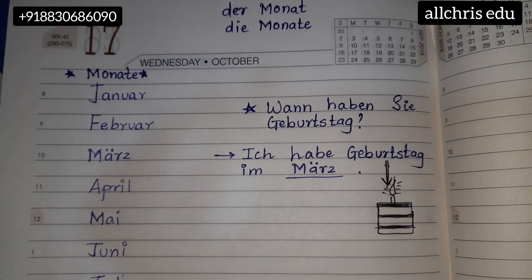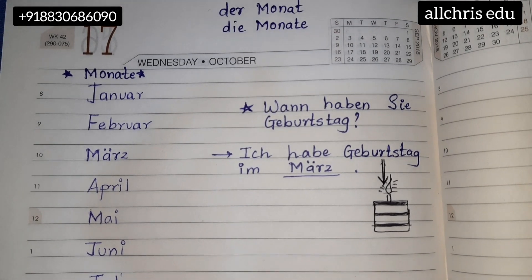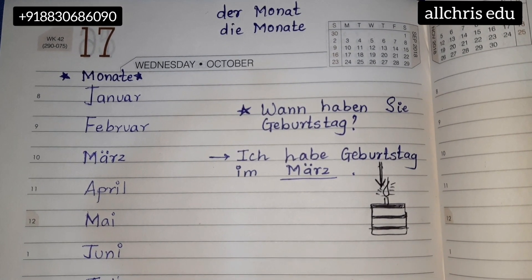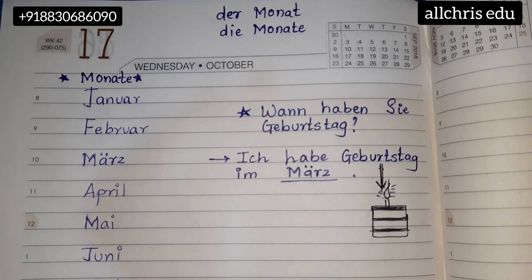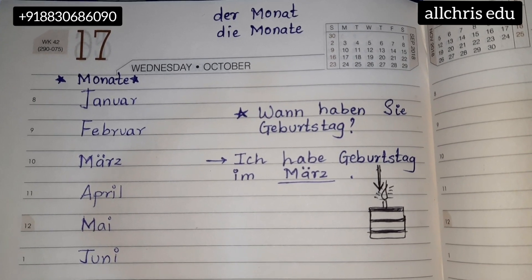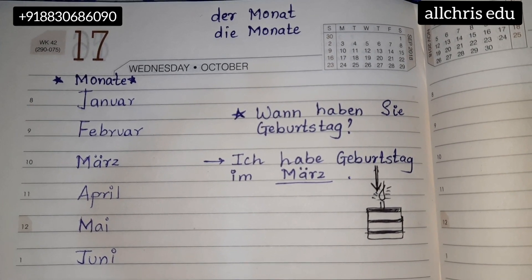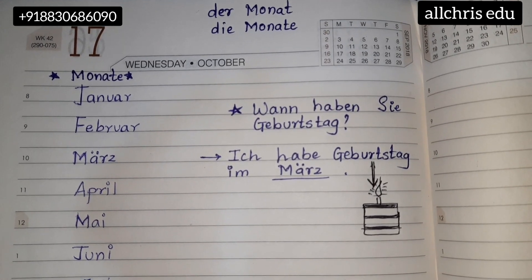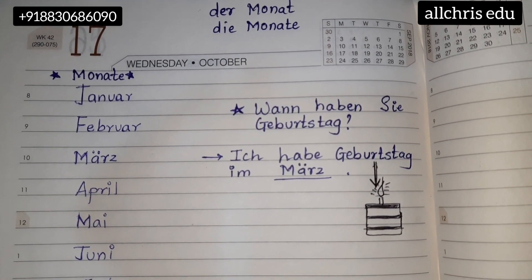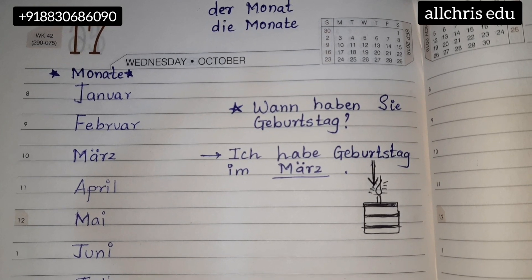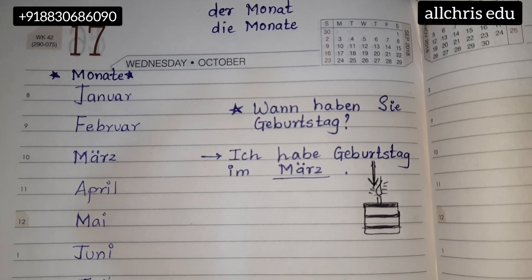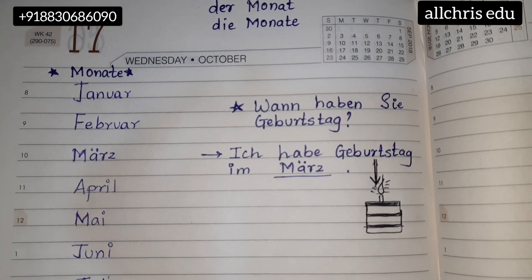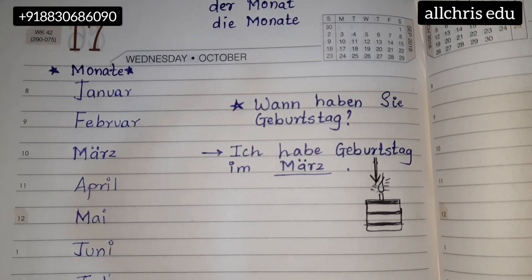Here are some months. We'll start with the first one: Januar. J-A-N-U-A-R is said as 'Ya-nu-ar.' Okay, Januar. Next is Februar — F-E-B-R-U-A-R — Februar.